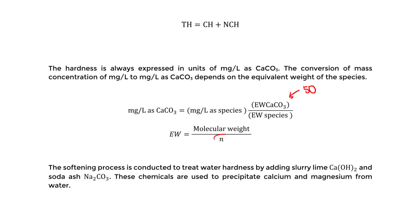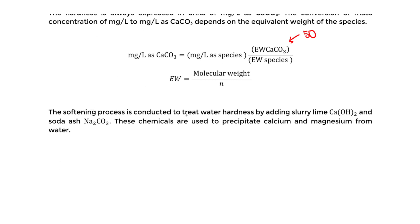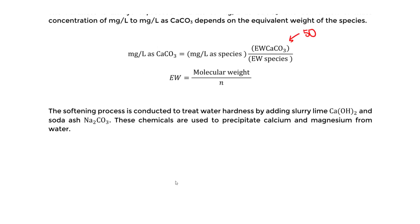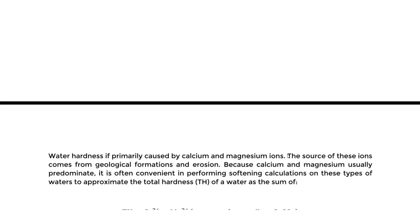The equivalent weight is just the molecular weight divided by n. To save time, we can extract the equivalent weight using the table in the handbook. The softening process is conducted to reduce water hardness by adding two major chemicals: lime and soda ash. These chemicals are used in precipitation reactions to remove calcium and magnesium from water. The equations for the total softening process are in the handbook on pages 341 to 342 in the new FE handbook.